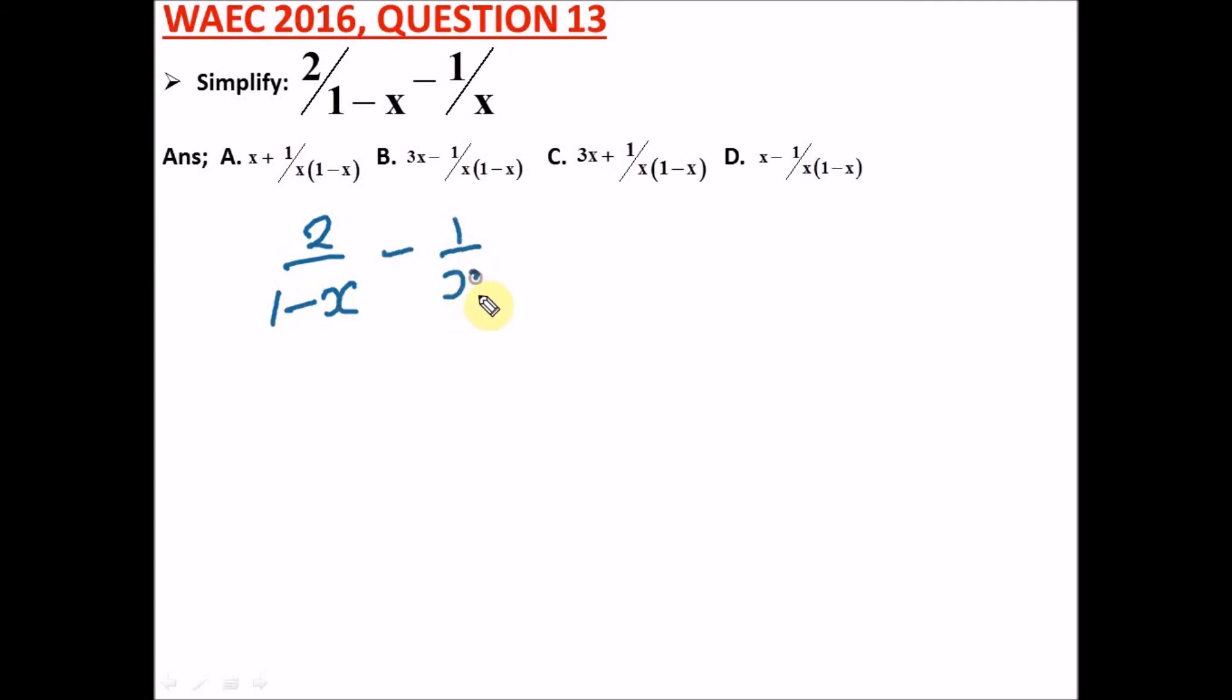So how do we simplify this? We have 2 over 1 minus x minus 1 over x. All we need to do is the LCM of these two, which will be x bracket 1 minus x. So this 1 minus x into this will cancel out, 1 minus x will cancel out, and x times 2 is 2x. Then minus, this x into this, x will cancel out, we're left with 1 bracket 1 minus x.